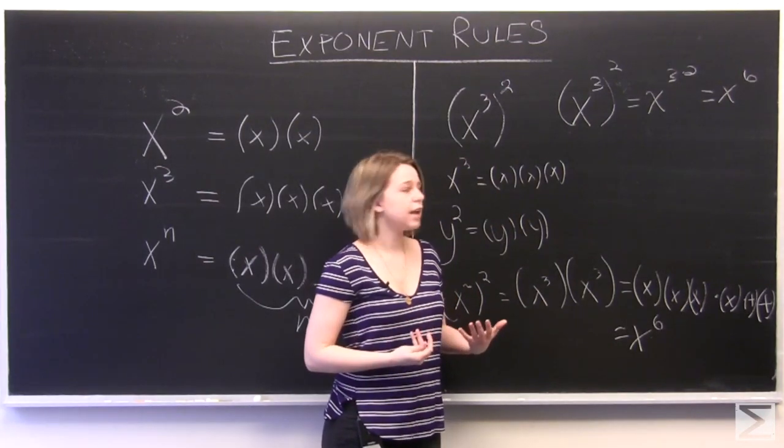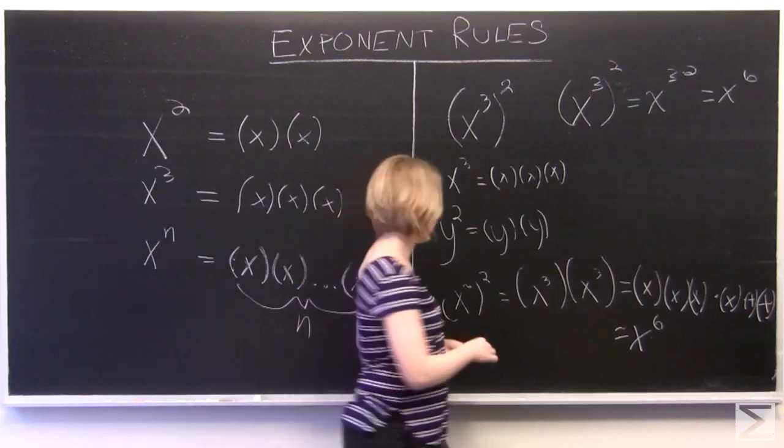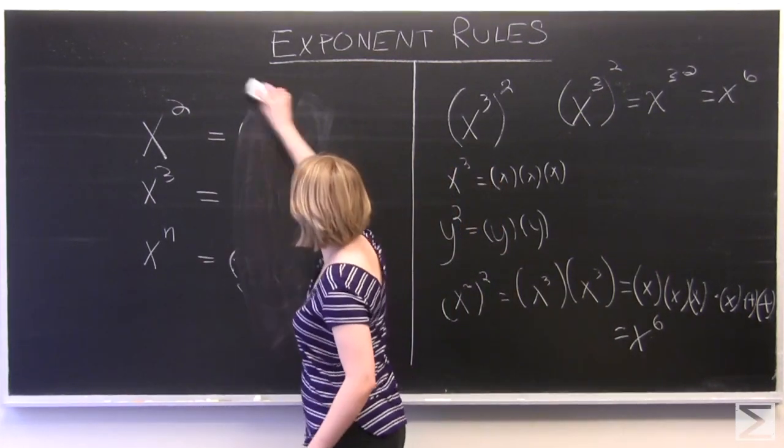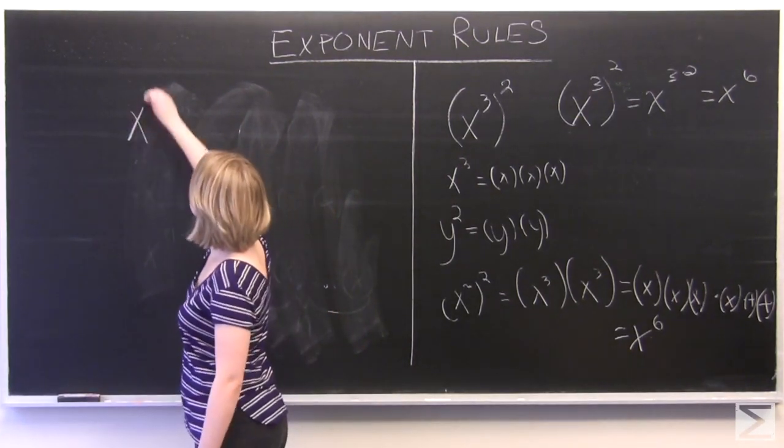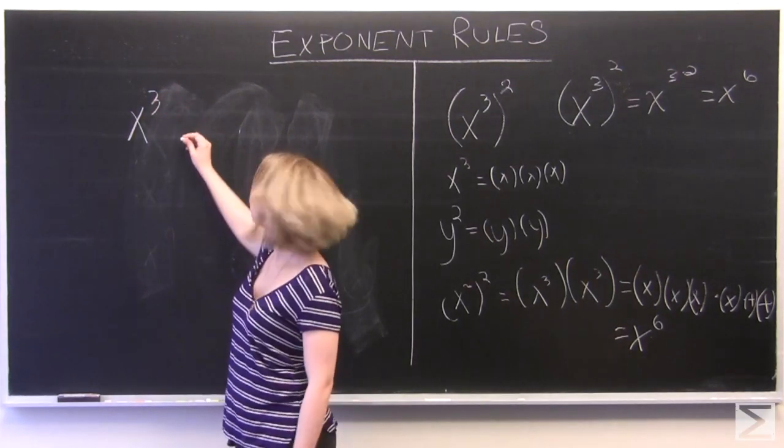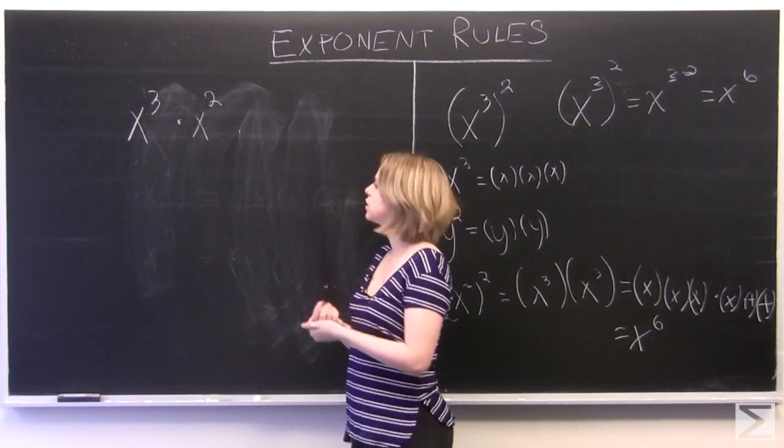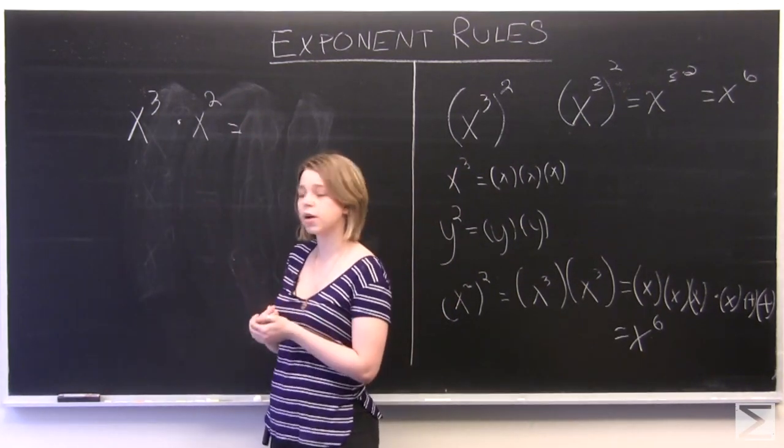And what would happen if you multiplied two different quantities with exponents together? Look at that over here. So let's work with x cubed and x squared again. So we'll say we have x cubed, and we want to multiply it with x squared. So the easiest way to do this is to just look at each of the quantities individually.